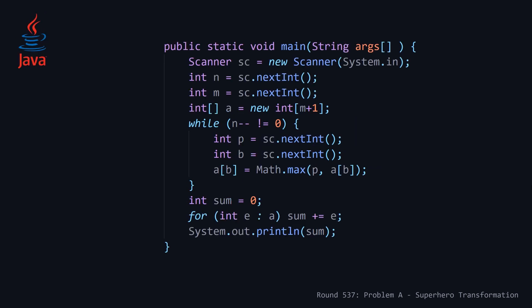Moving on to our Java solution — probably the ugliest of all of them, as is typically the case. We're doing the same as in the Python solution: reading in N and M, then declaring an array A to store our maximum prices. Then we're looping, not with a ranged for loop but with a while loop decrementing N until it equals zero. We read in P the price of our toy, and B the box it's going to go in. Then we set the maximum price to be the maximum of current price P and the price seen so far. Unfortunately we don't have a nice sum function like in Python. Java 8 does have something called an int stream, but the Hacker Earth compiler wasn't liking it, so instead we're hand rolling our own local variable sum and using an enhanced for loop to sum all the maximum prices, then outputting the value.